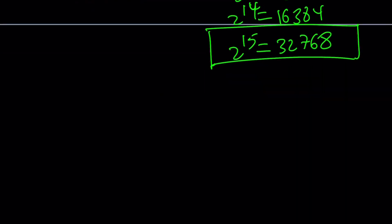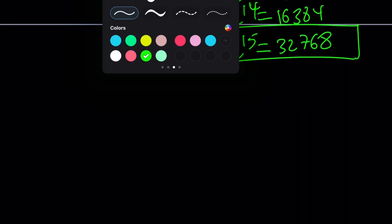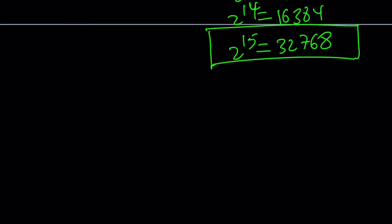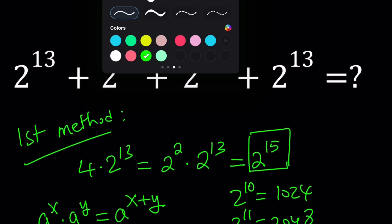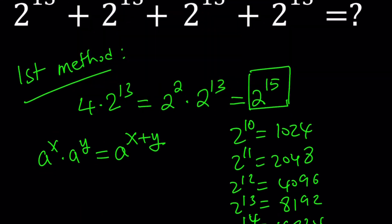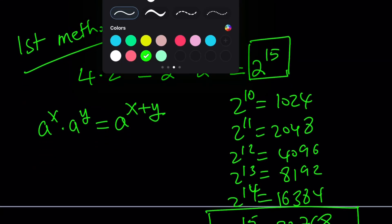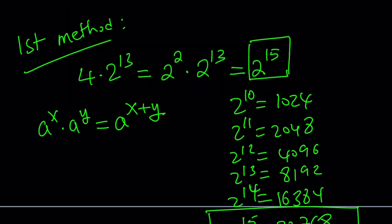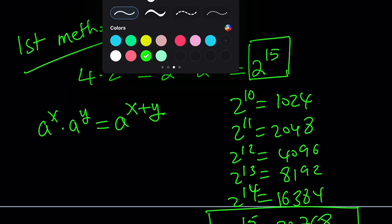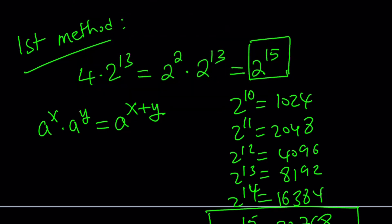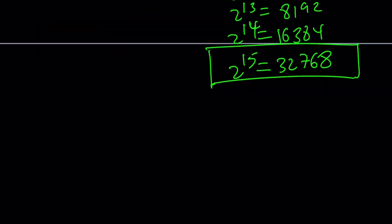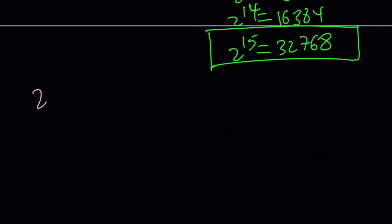So let's go ahead and talk about the second method and we will finish up. Sometimes Notability just likes to jump around and do crazy things. Second method.